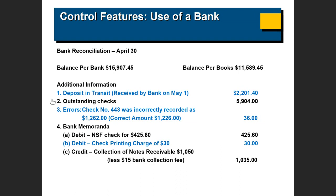The company's books show $11,000 and the bank has $15,000. The bank reconciliation is prepared so that you know why there is a difference. You subtract anything that should have been subtracted from the bank amount, add everything that should have been added to the bank account, add everything that should have been added to your books, and subtract everything that should have been subtracted from your books, so that you arrive at the same amount.